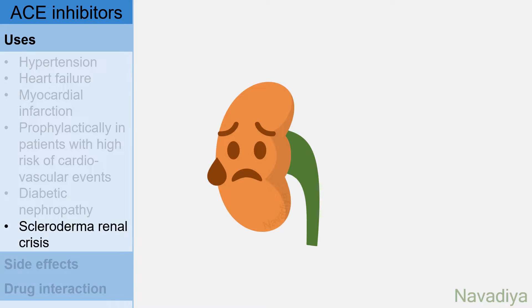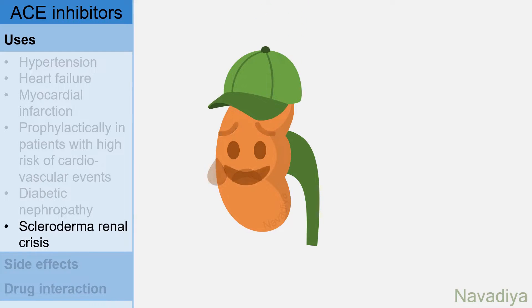Next use is scleroderma renal crisis. It is an emergency situation seen in patients with scleroderma, and ACE inhibitors play a life-saving role in this situation. So these were the uses.